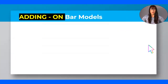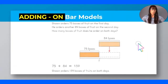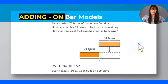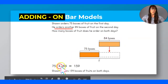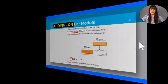Another type of bar model is the adding-on bar model. A word problem that calls for an adding-on bar model could be: Sean orders 75 boxes of fruit on the first day and another 84 boxes of fruit on the second day — how many boxes of fruit does he order on both days? The keyword for an adding-on bar model is 'another.' He orders another 84 boxes, so we will definitely be adding. I don't know the total, so I have to do addition because my whole is missing — the same formula applies.